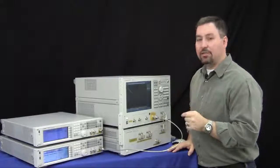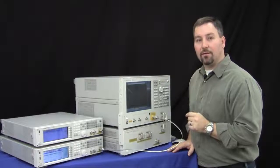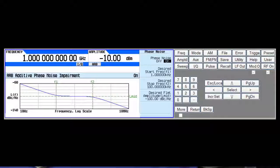Next we're going to go ahead and demonstrate the phase noise impairments on the new MXG. I have it set up for a 1 kilohertz to 100 kilohertz frequency range and we have the phase noise set at minus 100 dBc per hertz.